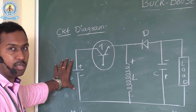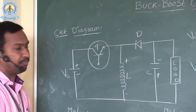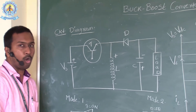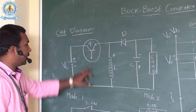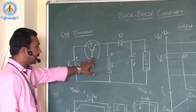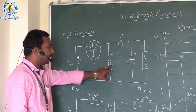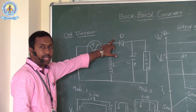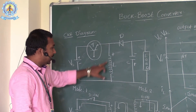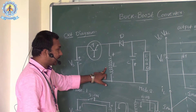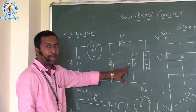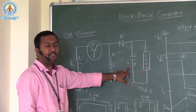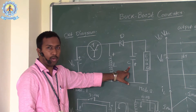Now let us discuss the operation of a buck boost converter with the help of a simple circuit diagram. In the circuit diagram, the main components are: a switch, as well as L and C, as well as the diode D, where the inductance and capacitance act as filtering components.